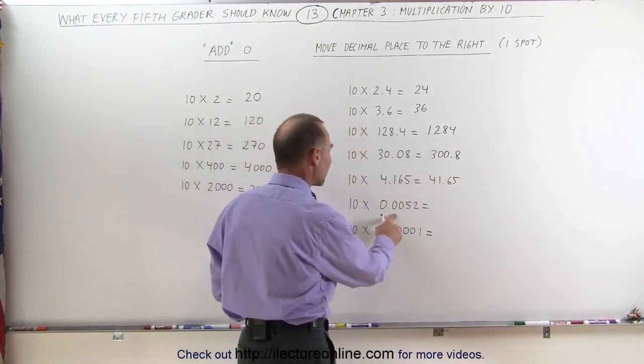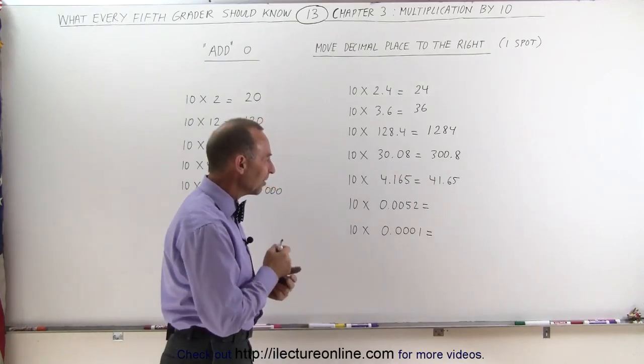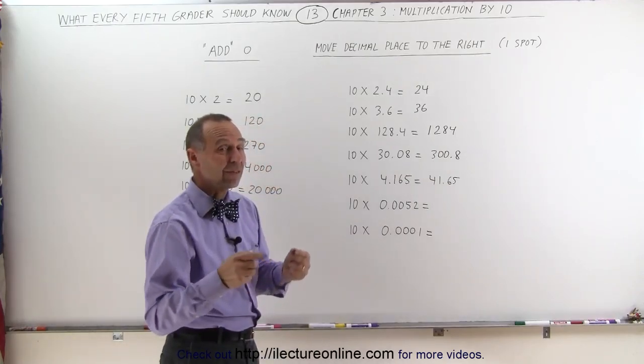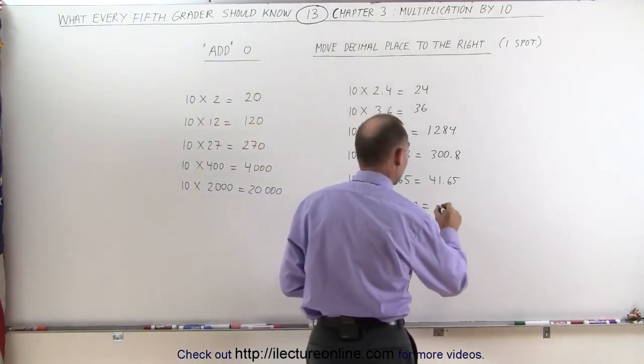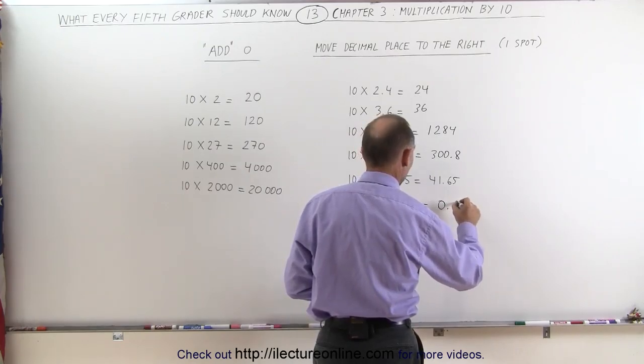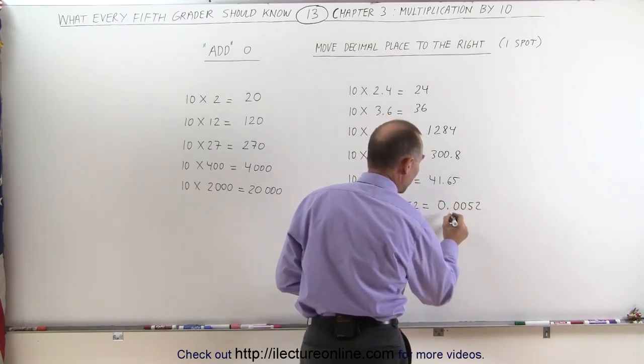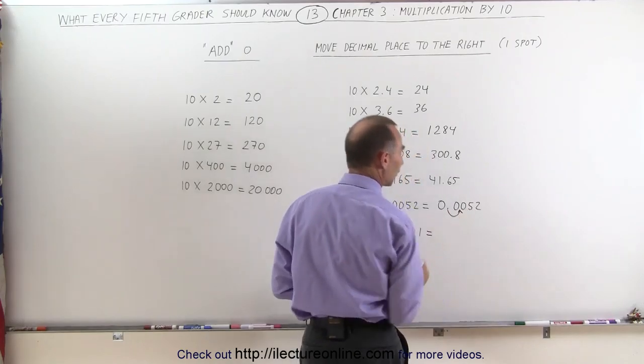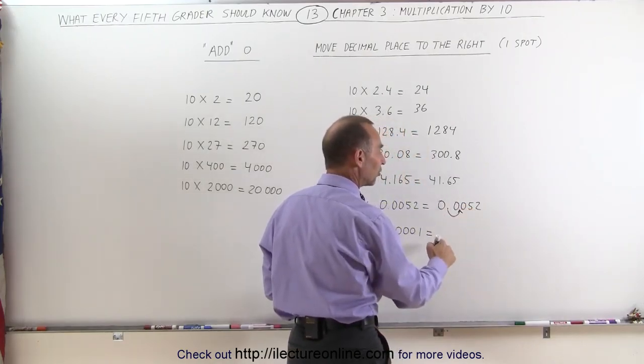On the next number here, when there's so many zeros, it makes it a little bit more confusing. And sometimes it's easier to do it like this. This is equal to 0.0052, and we physically moved the decimal place over like that. We physically show what it looks like, and so you can see that's equal to 0.052.